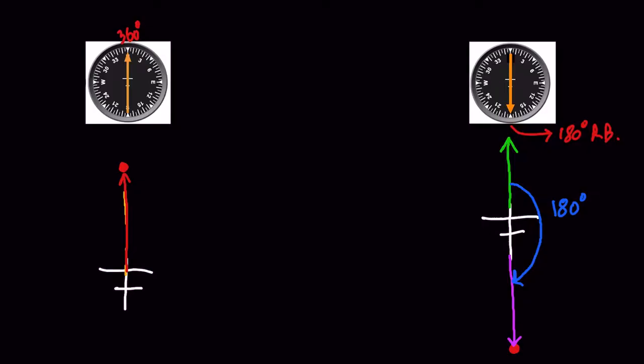The RBI always indicates the relative bearing of the station from the aircraft. This needle always points towards the relative bearing — when tracking to a station it points at 360 or 0 degrees, and when tracking away from a station the needle points towards 180 degrees because the relative bearing is 180 degrees.